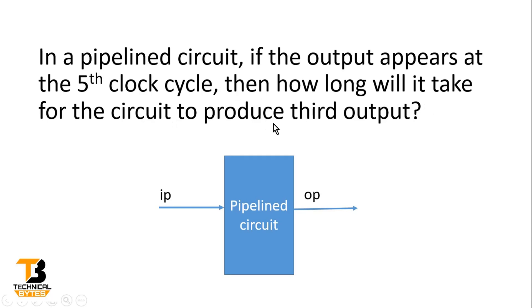for the circuit to produce third output? Friends, the problem is very simple. The first input is reaching the output in the fifth clock cycle and we have to tell how long will it take for the circuit to produce third output. That means in which clock cycle the third input is reaching to the output. To simplify our